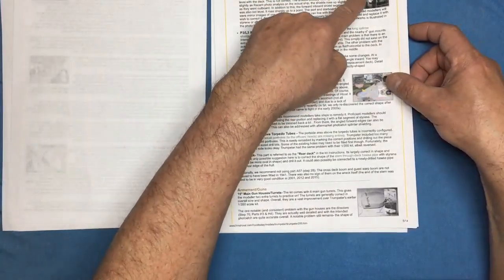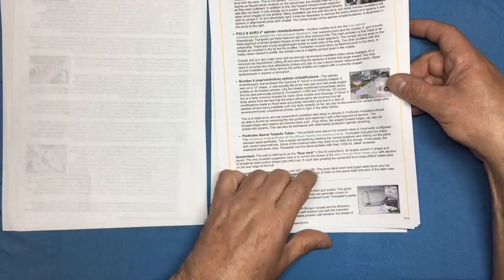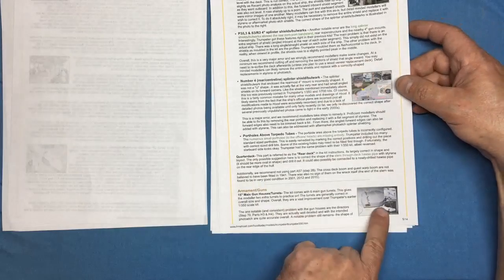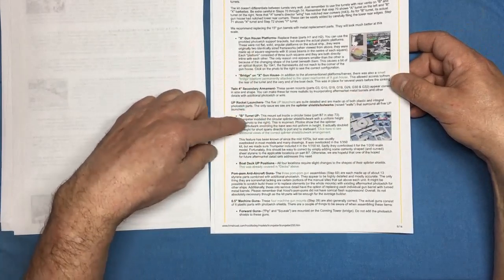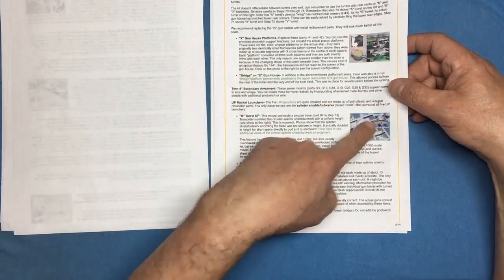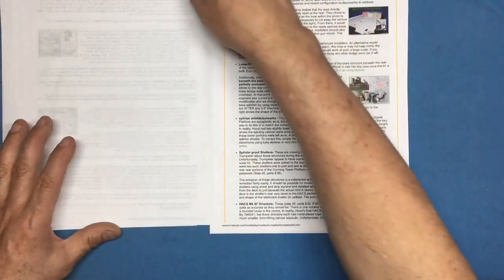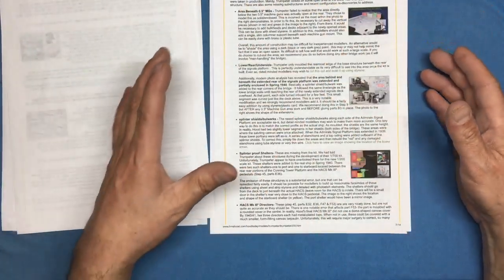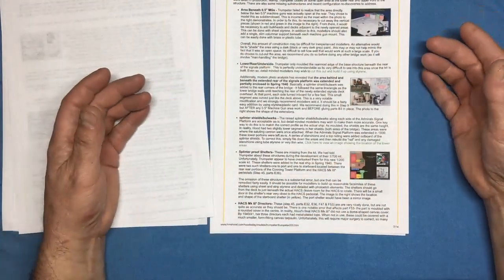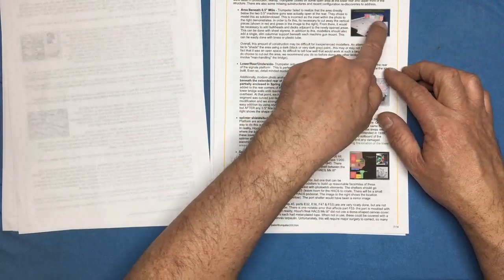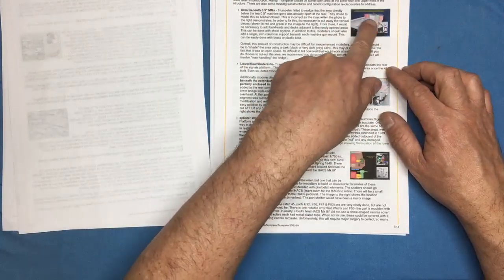Then we got some more corrections here of the splinter shields. We've got the number four splinter shield bulwark, corrections to the turrets, and then we've got gun house platforms. B turret up here is going to be cut. There's some cutting to do on there. I mean really you could have fun modifying this kit without buying aftermarket sets because it's all just, you know, cutting and modifying.